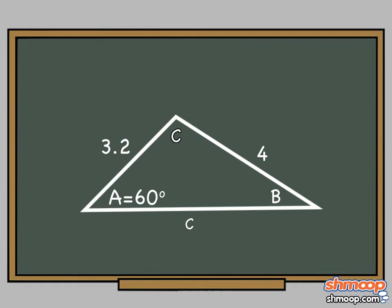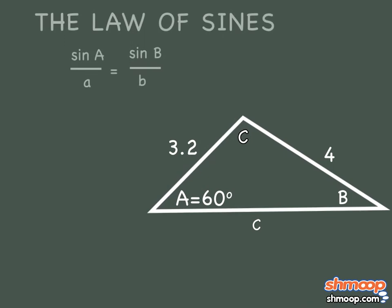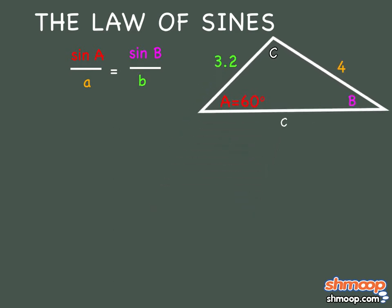To figure out the rest of the angles and side lengths, they'll use the Law of Sines. Sine A over a equals sine B over b. We can plug in A as 60 degrees and side length a as 4. The only other side we have is 3.2, so that'll be b.